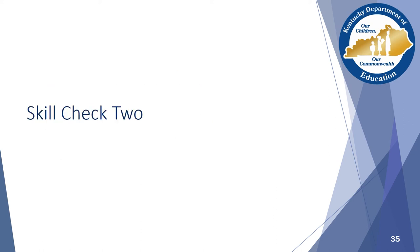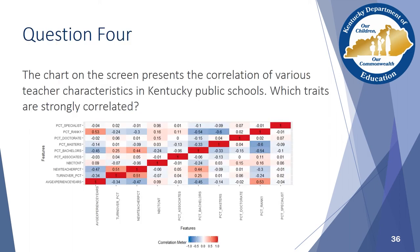It's time for another skill check. Just as before, the following slides will ask you to interpret the results of some statistical tests. Question 4: The chart on the screen presents a correlation of various teacher characteristics in Kentucky public schools. Which traits are strongly correlated? Pause the webinar now and replay when you are ready to hear the discussion.